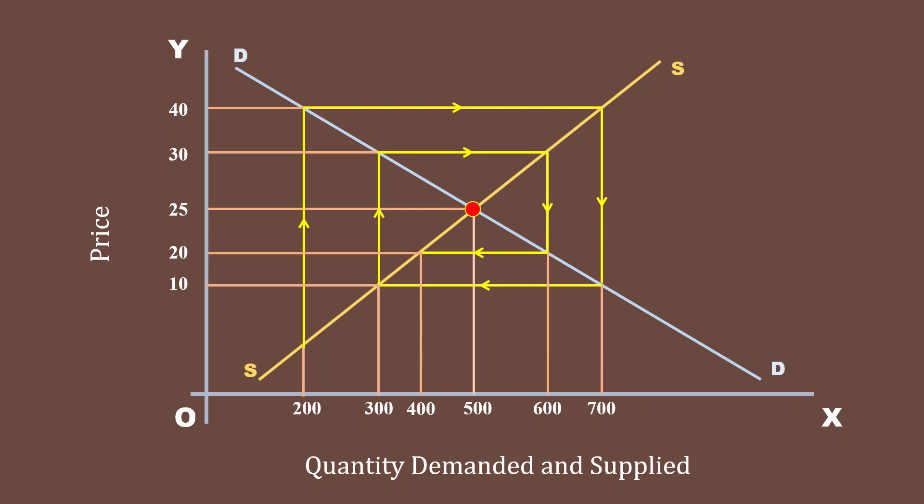But how? Look at the oscillations. The price oscillates from 40 rupees to 10 rupees, from 10 rupees to 30 rupees, and from 30 rupees to 20 rupees. The quantity also oscillates from 200 units to 700 units, 700 units to 300 units, from 300 units to 600 units, and 600 units to 400 units. The range of oscillations diminish and move towards stable equilibrium. In other words, oscillation is damping. Our conclusion is that when there is damping oscillation, the market is sure to reach stability or stable equilibrium.